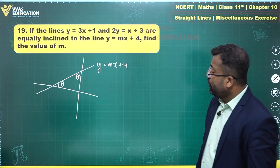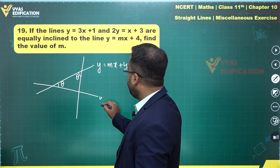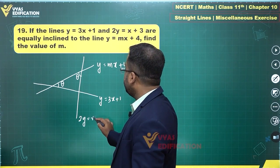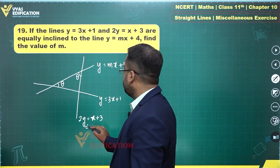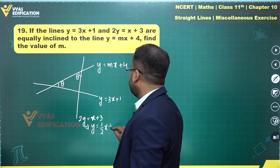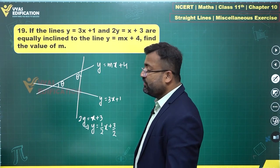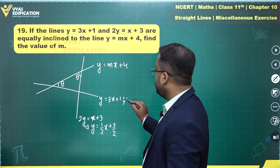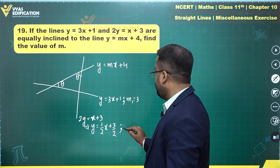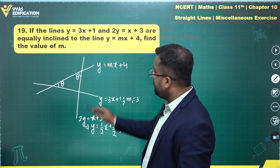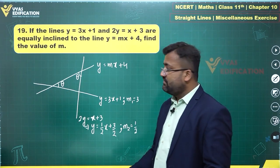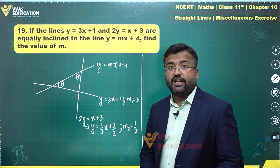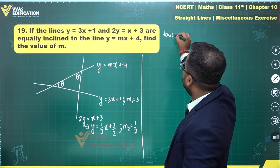We have lines y = 3x + 1 and 2y = x + 3, which gives us y = (1/2)x + 3/2. These are equally inclined to y = mx + 4, so slope m1 = 3 and slope m2 = 1/2. I can apply tan θ for each line and equate them to get the value of m.